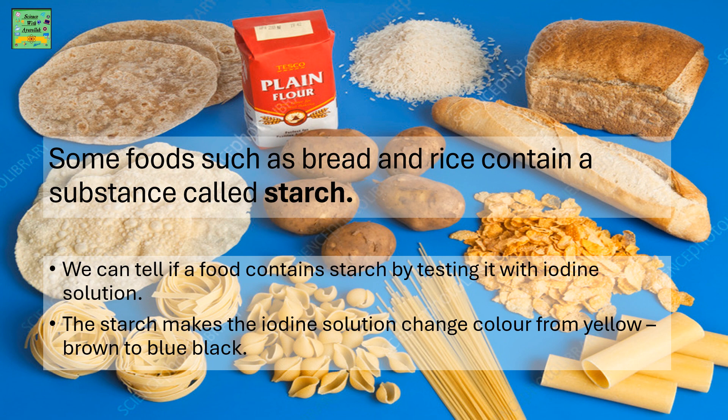Some foods such as bread and rice contain a substance called starch. We can tell if a food contains starch by testing it with iodine solution. The starch makes the iodine solution change color from yellow-brown to blue-black.